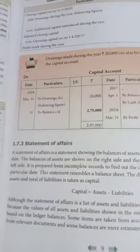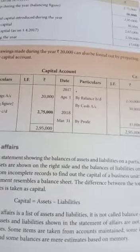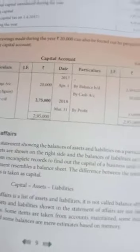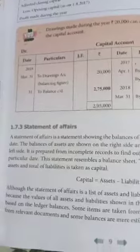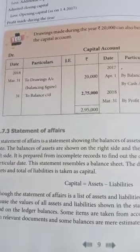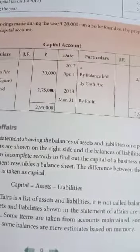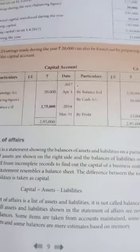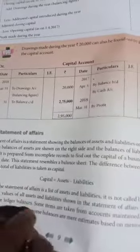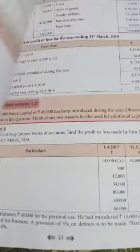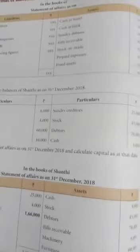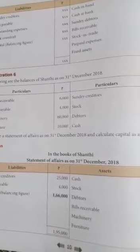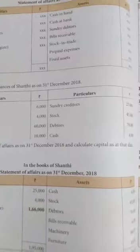There are some items from relevant documents and some balances that are mere estimates based on memory. This is the Statement of Affairs. Now let's look at the format of the Statement of Affairs. In the books, the Statement of Affairs is prepared as on a particular date.